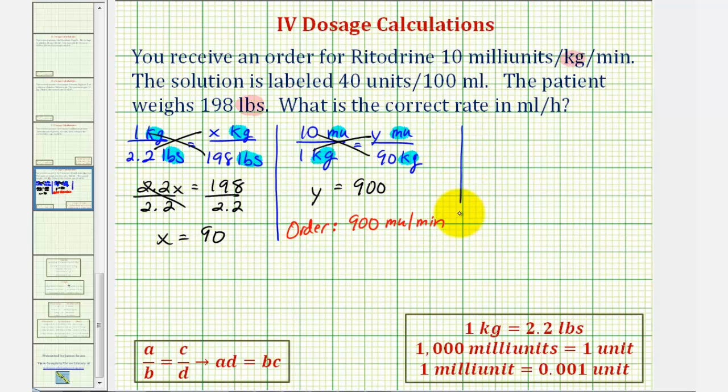So for the next proportion, 900 milliunits per one minute must be equal to some number of milliunits, we'll call it z milliunits, per one hour. But because we need the same units on the bottom, notice here we have minutes. Instead of writing one hour, one hour is equal to 60 minutes, so we'll write this as 60 minutes.